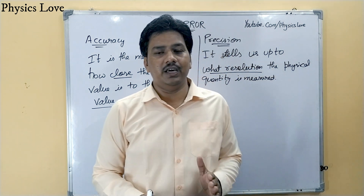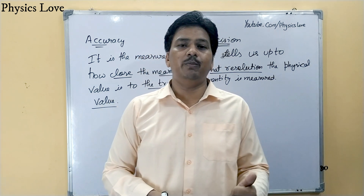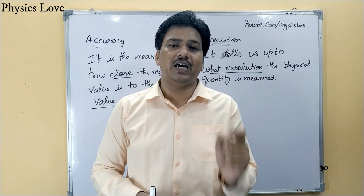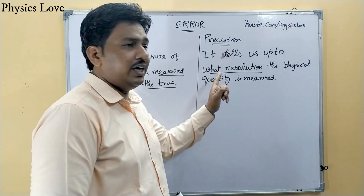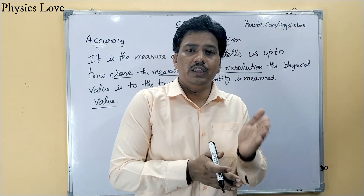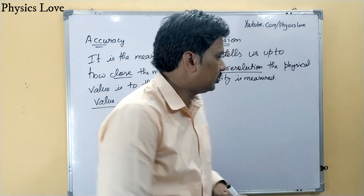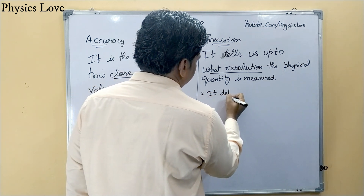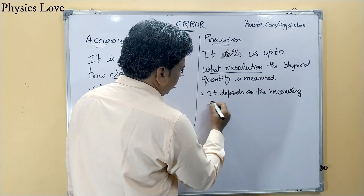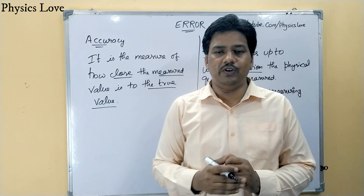Precision tells us the limit of resolution of the physical quantity measured — how many decimal places the measurement has been taken to. The more decimal places you measure up to, the more precise your result will be. Precision depends on the measuring instrument — specifically, the limit of resolution of that instrument and how many decimal places it can measure.